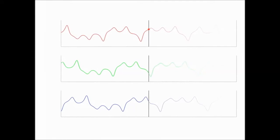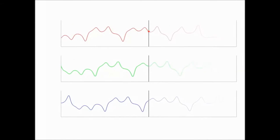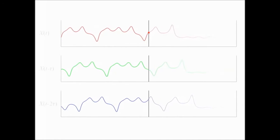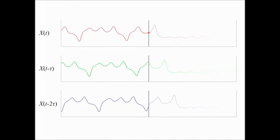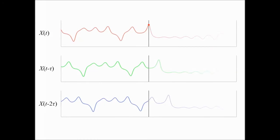For example, consider the three time series shown here. These are all copies of variable x. Each is displaced by an amount tau, so the top one is unlagged, the second one is lagged by tau, and the blue one on the bottom is lagged by 2 tau.